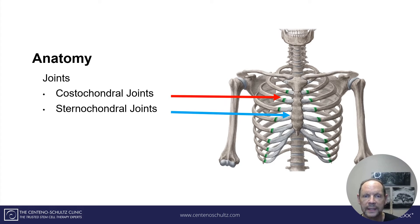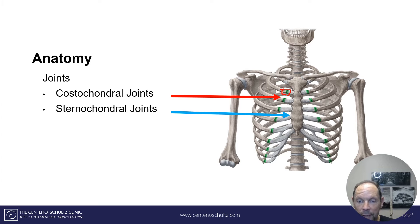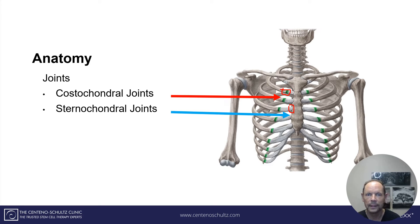There are two joints at each level of the rib. The first is the costo-chondral joint, which is where the rib intersects with the costal cartilage. Then there is where the costal cartilage interfaces with the sternum, otherwise known as the breastplate. So there's a rib, an intersection with costal cartilage forming two joints, and it connects to the sternum.